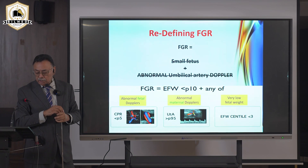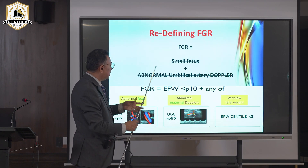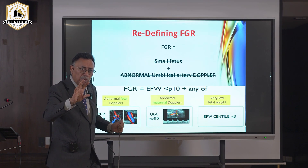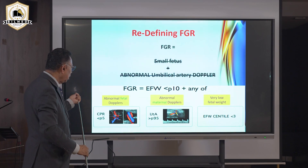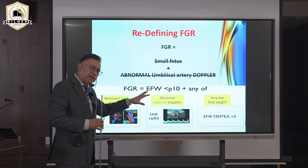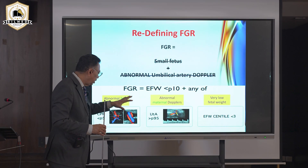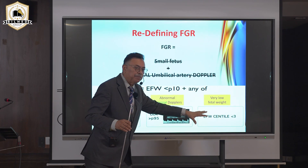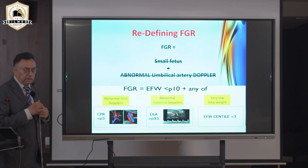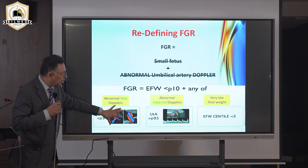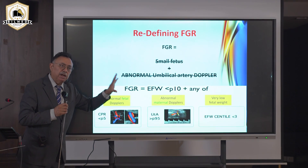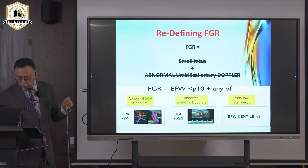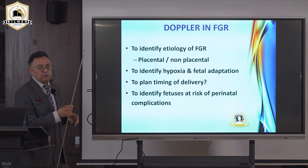Previously, FGR was defined as a small fetus with abnormal umbilical artery Doppler — many radiologists still use this definition. Today, fetal growth retardation is defined as expected fetal weight less than the 10th centile with abnormal fetal Doppler, abnormal maternal Doppler, or a very low centile with normal Doppler (less than 3rd centile). The definition is now based on both maternal and fetal color Doppler combined with weight.